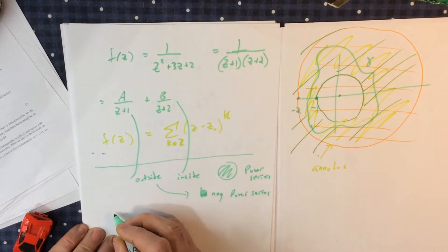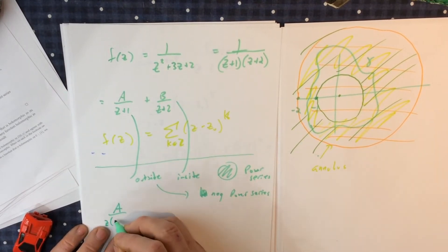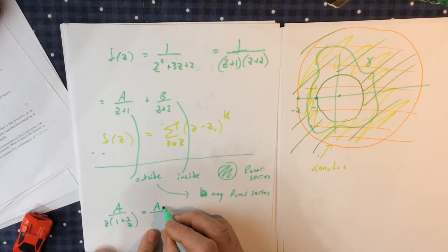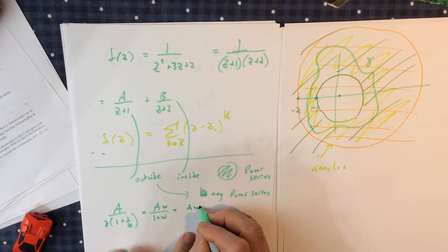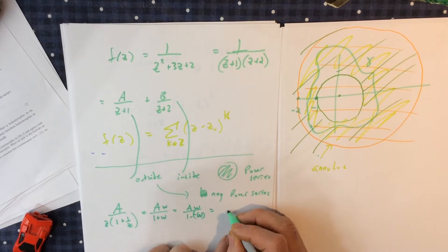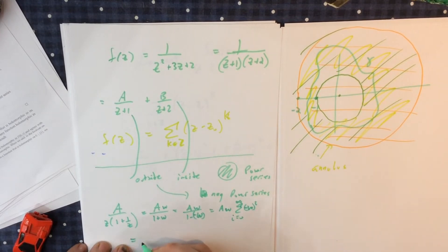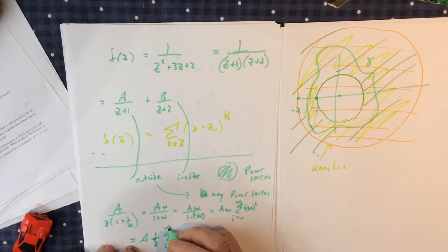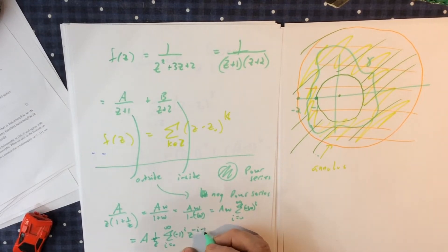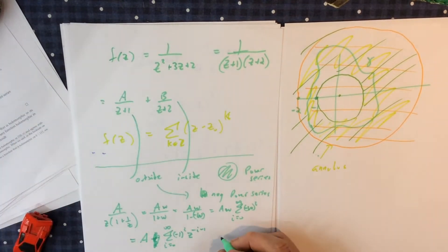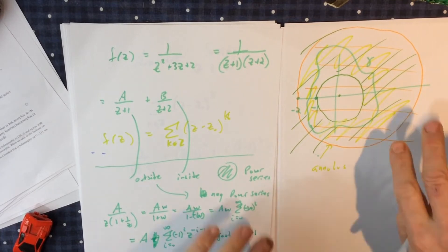For the first term, factoring out z: we have 1 over z times 1 over (1 plus 1 over z). Calling 1 over z equal to w, we have w over (1 plus w), which equals A times w times the sum of (minus w) to the i, i equals 0 to infinity. Bringing back w equals 1 over z, it's the sum from i equals 0 to infinity of (minus 1) to the i times z to the minus i. This is a negative power series valid for |z| greater than 1.